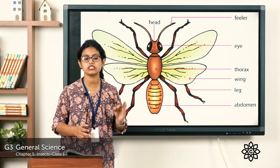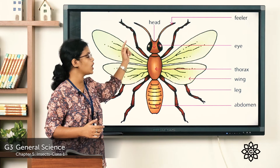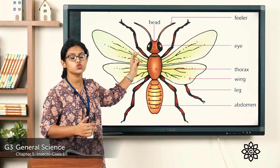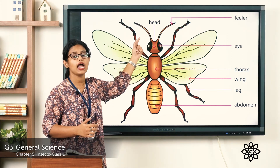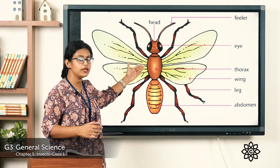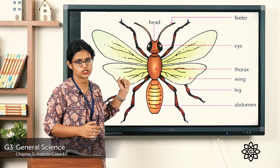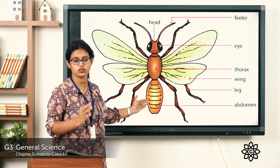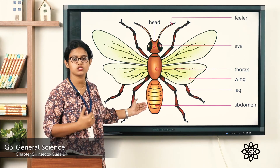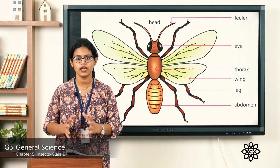So the body of an insect is divided into mainly three parts: the head, the thorax, and the abdomen. The head consists of two eyes, a pair of feelers or antennae, and a mouth. The thorax is the middle section where the legs and wings are attached. The abdomen is the third main part, which helps an insect in digesting its food.